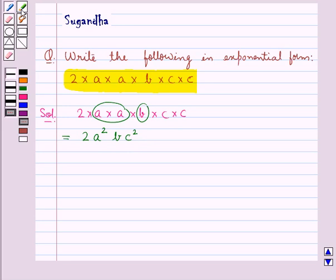So we have written this in exponential form as 2A square BC square.